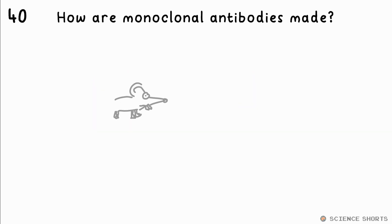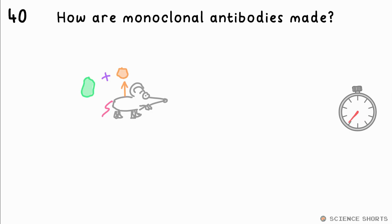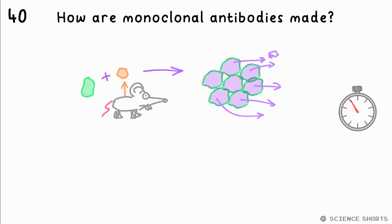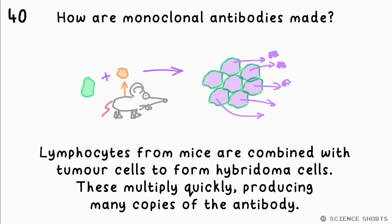Finally, question 40 — just for triple. How are monoclonal antibodies made? Lymphocytes from mice are combined with tumour cells to make hybridoma cells, which multiply quickly, producing many copies of the antibody.